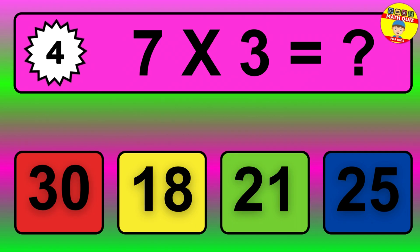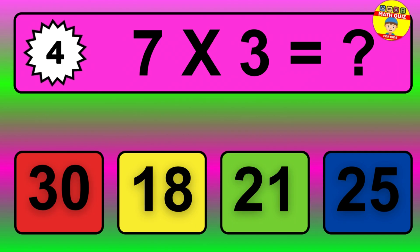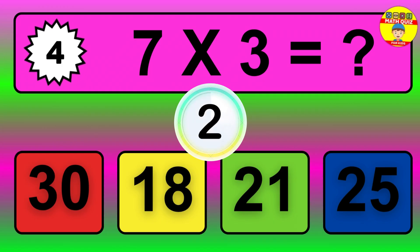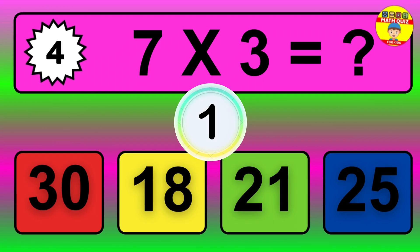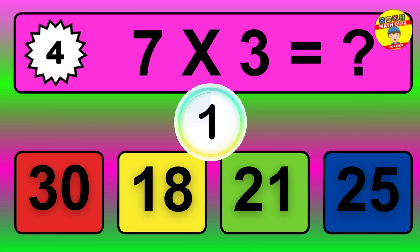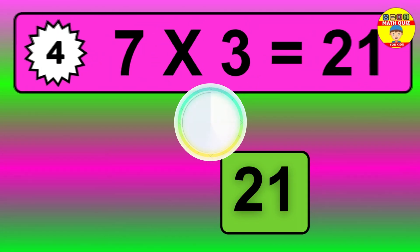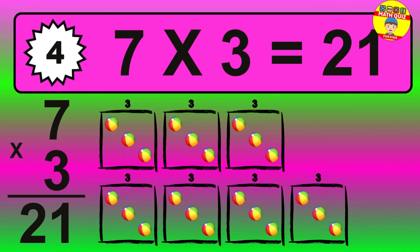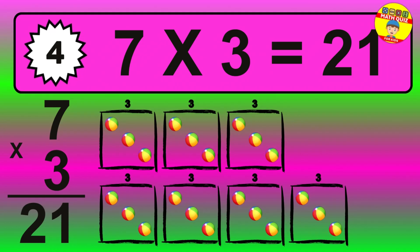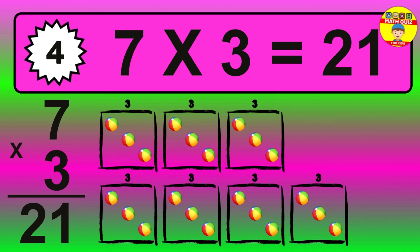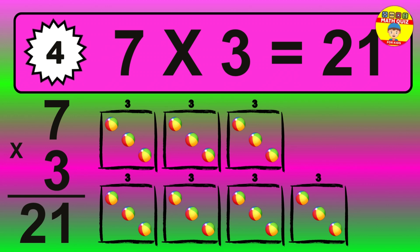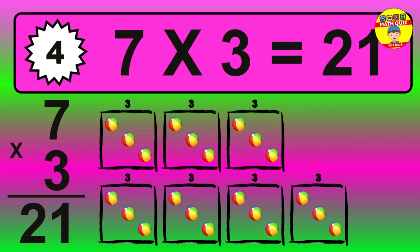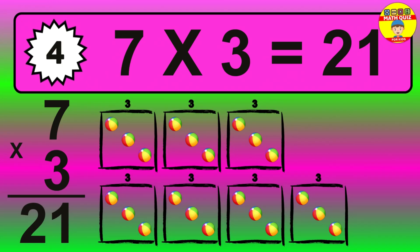Question 4. 7 times 3 equals what? The answer is 7 times 3 is 21. To calculate, we have 7 groups with 3 balls each one. So, how many balls do we have? 21 balls.